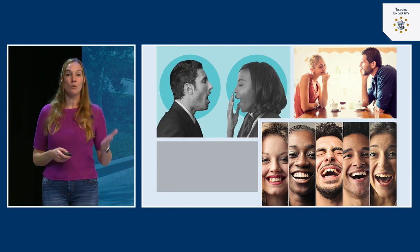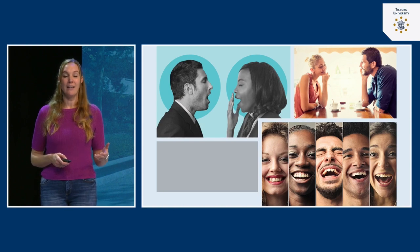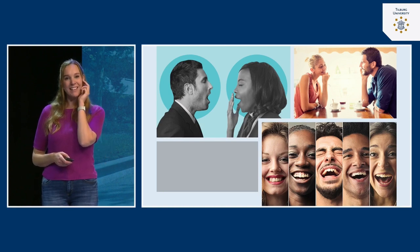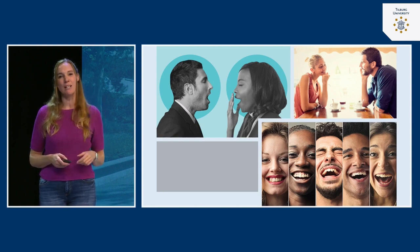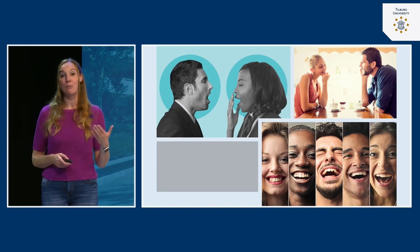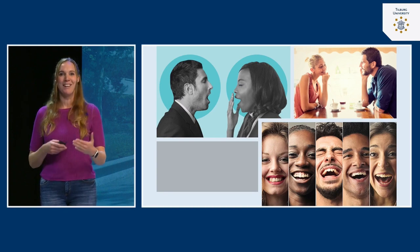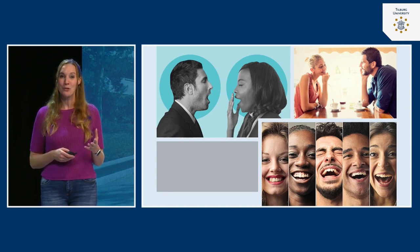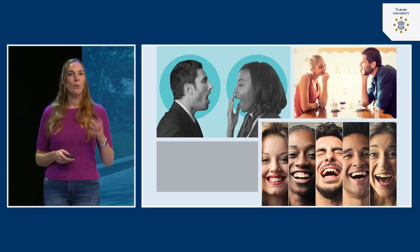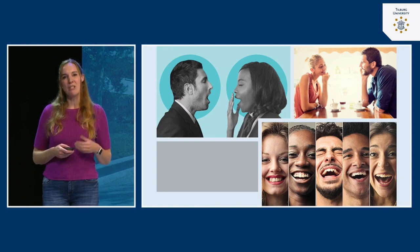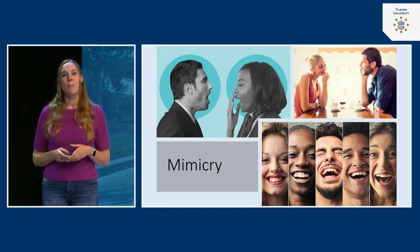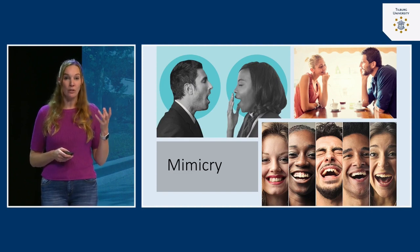When it comes to body postures, we mimic others. If you're talking to someone and their hand is near their face, it's quite likely that we mimic that behavior as well, and we do so especially if we like a person. For example, if you're on a date with someone and that person starts mimicking your body posture, this is actually a strong sign that this person is interested in you. This type of bodily imitation is called mimicry.